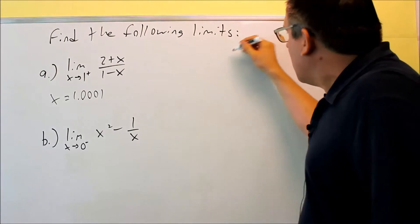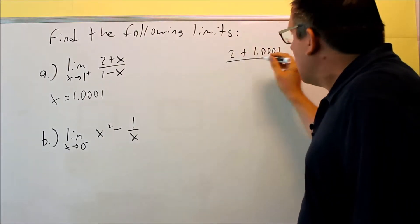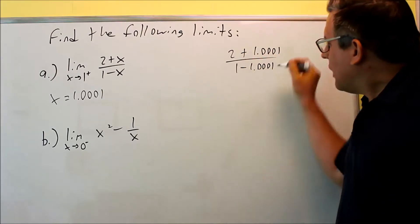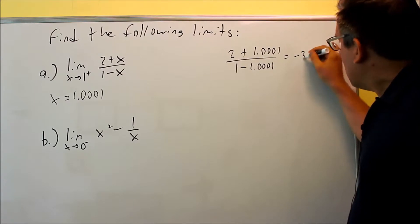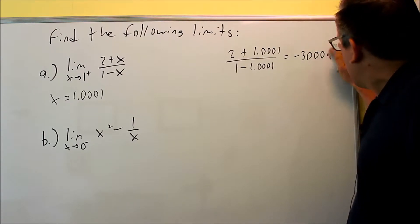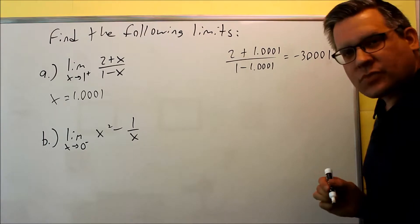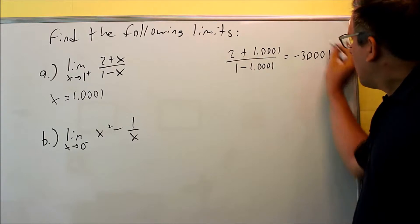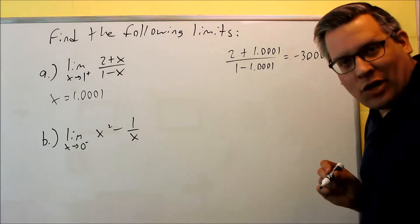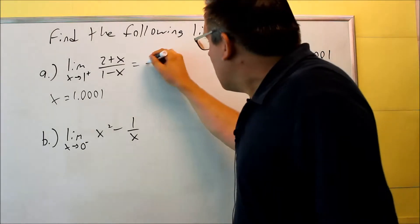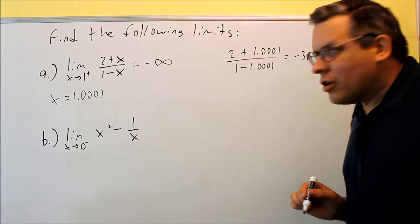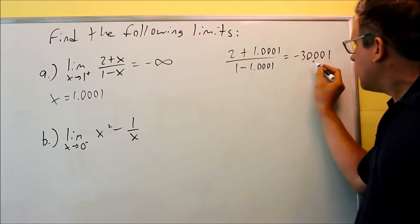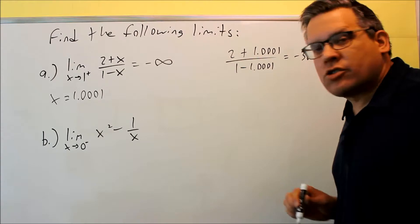I'm going to plug this in and do some scratch work. I'm going to do (2 + 1.0001) / (1 − 1.0001). When I work this out, the number I end up getting is −30,001. So what this is telling me is that the whole result is going to a very large negative number. That means this limit is going to negative infinity based on the answer I got. The test number told me it's going to go to a very large negative number — that's why I chose negative infinity.